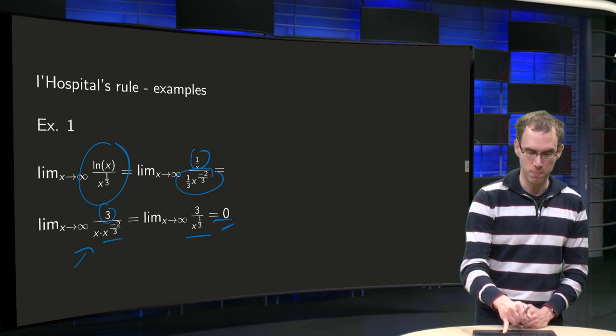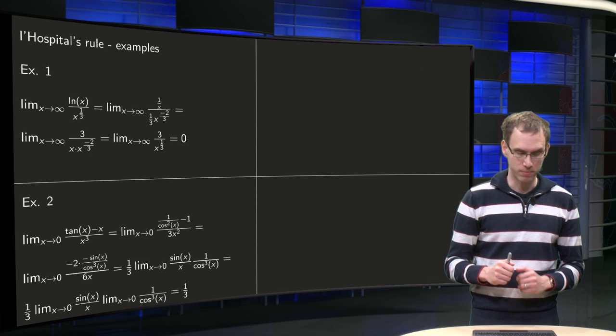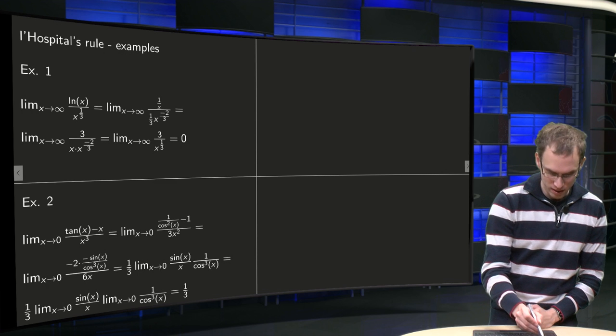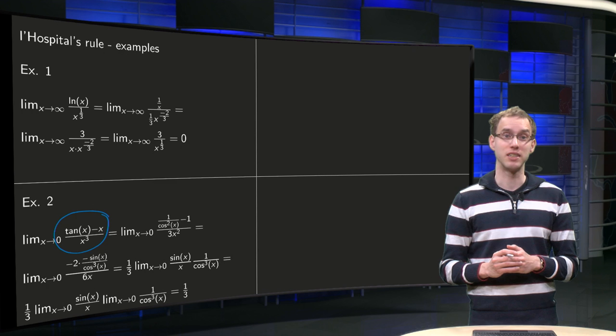So there we are. Second example, that one is a bit nastier. We have the limit as x approaches 0 of tan(x) minus x divided by x cubed.